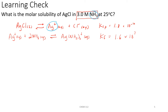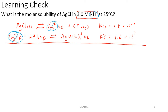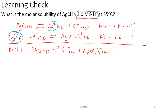After writing the two equations, we add them together and multiply the equilibrium constants. The silver ions cancel — one on each side of the arrows — leaving the overall equation: solid AgCl plus 2NH₃(aq) forms Cl⁻(aq) plus Ag(NH₃)₂⁺(aq). Multiplying Ksp times K sub F, our new equilibrium constant comes out to 2.88 × 10⁻³, which is not as small as we are used to working with.